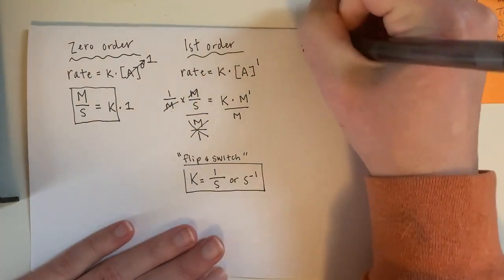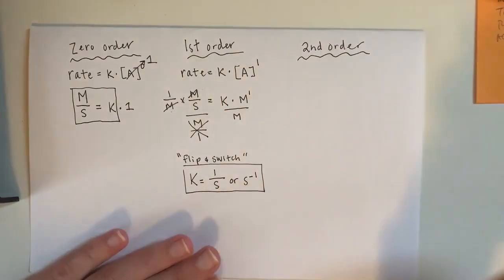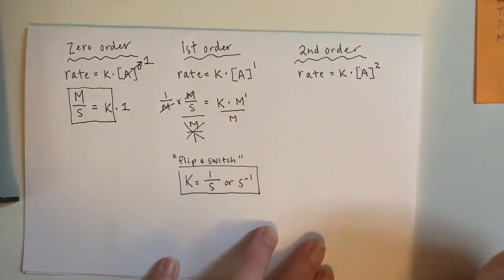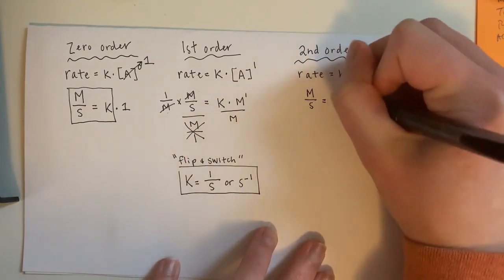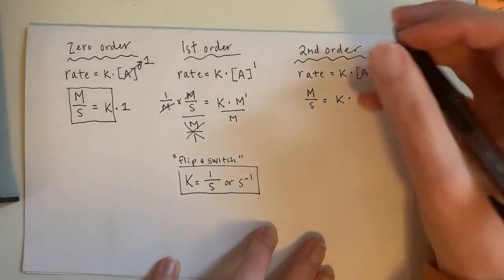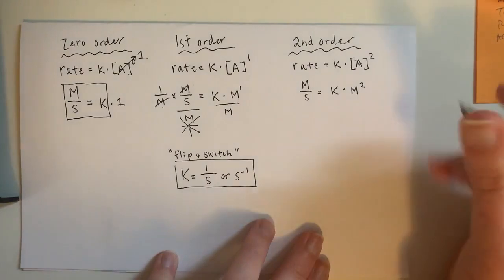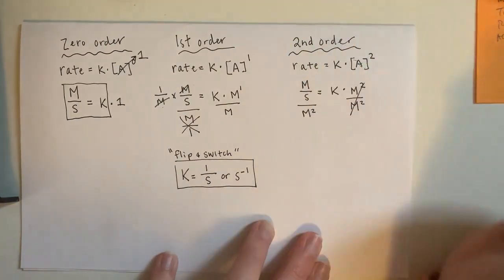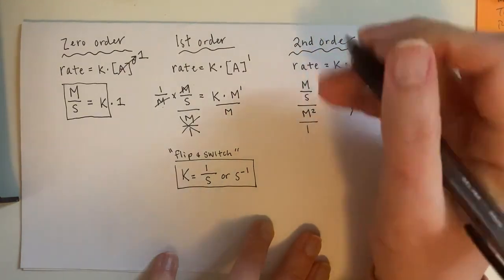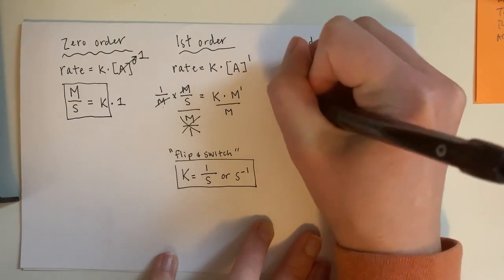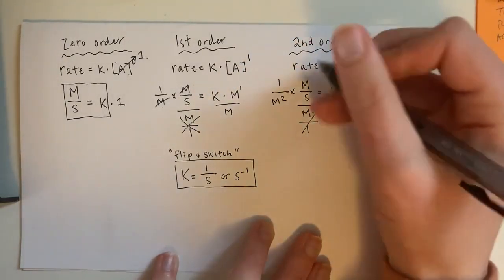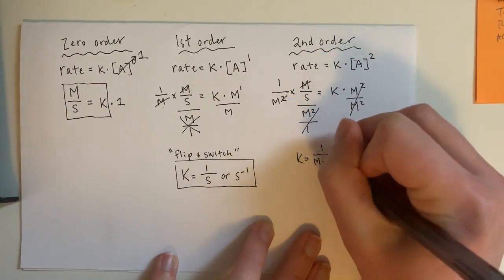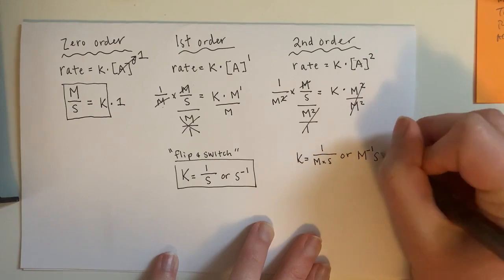And second order is rate equals K multiplied by A squared. Rate is again molarity per second equals K multiplied. This is molarity squared. So again, I'm solving for the units of K. I need to get K by itself. So I divide both sides by M squared. So that will cancel. And then I put this over 1. I flip it. And switch it. And then I can see that my molarity on the top will cancel out with 1 on the bottom. And I will be left with the units of 1 over molarity times seconds, or molarity negative 1 seconds negative 1.